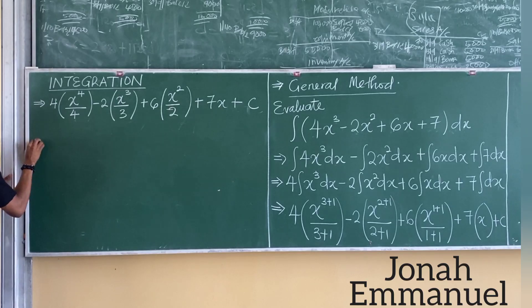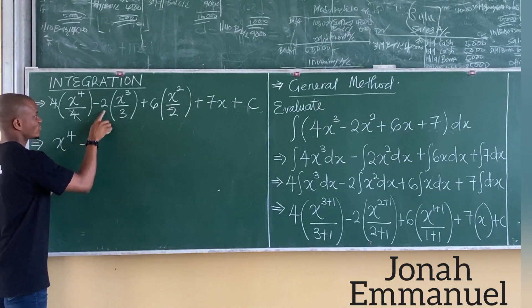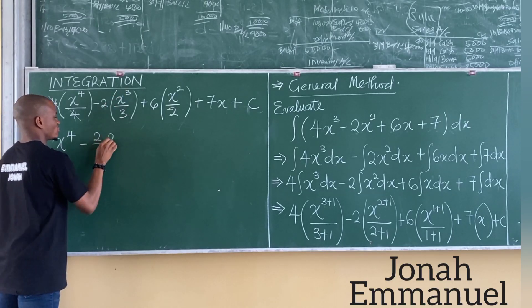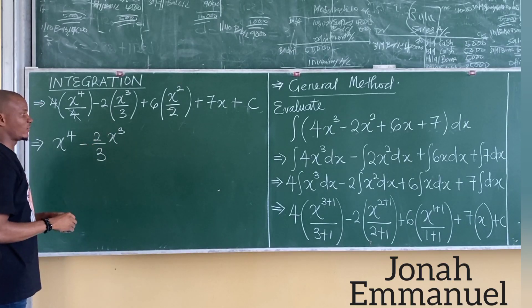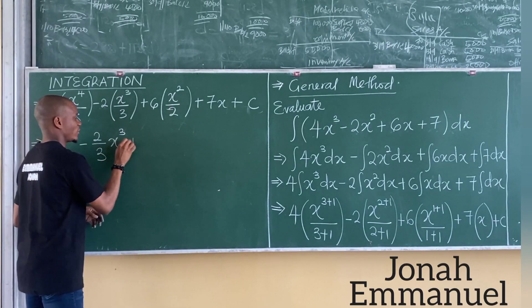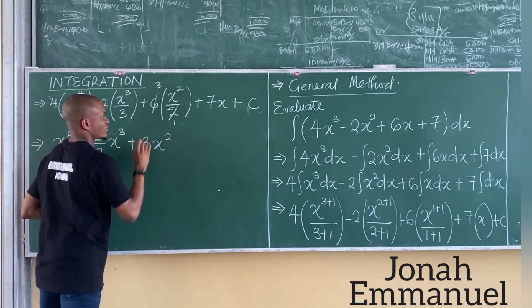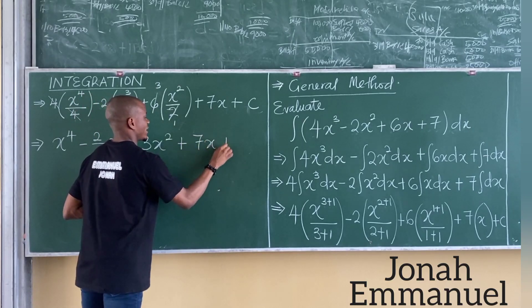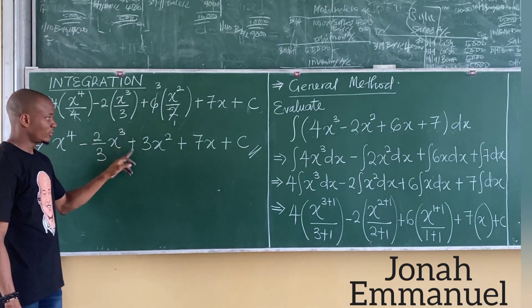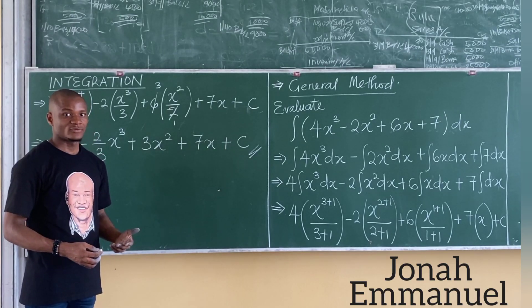Simplify further: 4 cancels 4, leaving x to the power 4. Then 2 over 3 x cubed. Then 6 over 2 gives 3, so plus 3x squared. Plus 7x plus c. So the final answer is x to the power 4 minus 2 over 3 x cubed plus 3x squared plus 7x plus c. This is how you do integration using the general method.